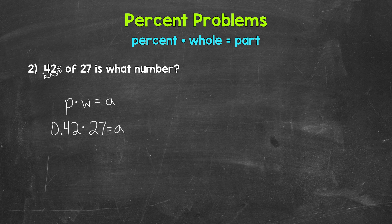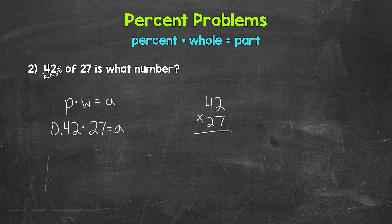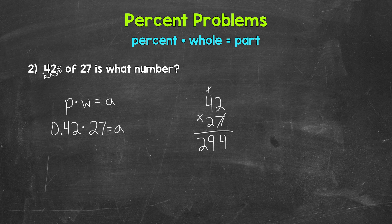The variable is isolated. So all we need to do is multiply on the left side of the equation. We need to do 42 hundredths times 27. So let's come to the side and we will take any decimals out. So let's do 42 times 27. Let's start with 7 times 2, which is 14. Then we have 7 times 4, which is 28. Plus 1 is 29.